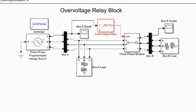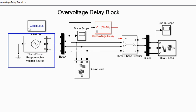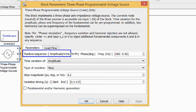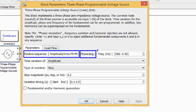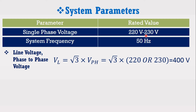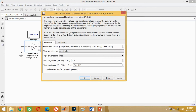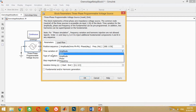This model contains the three-phase programmable voltage source block. Double click on it to see its values. In the parameter section, the first data consists of positive sequence voltage amplitude, angle, and frequency. Here in this model, 400 volts is used. As we know, single phase voltage in Pakistan is 220 to 230 volts, so its line voltage or phase-to-phase voltage becomes 400 volts. Angle and frequency used here are 0 degrees and 50 Hz respectively. The second parameter consists of time variation of various parameters such as amplitude, phase, and frequency. You may select none if you do not want to simulate any variation.